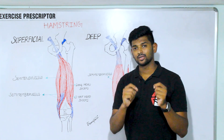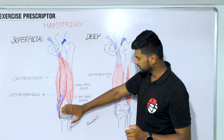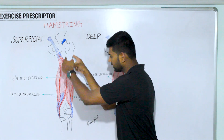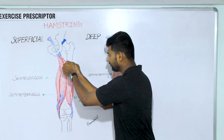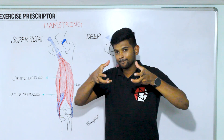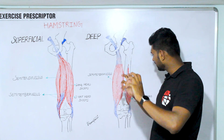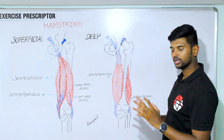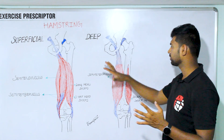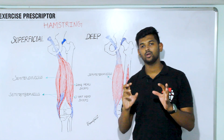Now the reverse mover action of the hamstring: consider the origin moving towards the insertion with the insertion fixed. All three muscles attach over the ischial tuberosity and fibers run vertically. When they contract in this way, they pull the ischial tuberosity downward to create posterior pelvic tilt. This excludes the short head of biceps femoris, because that muscle does not cross the hip joint and does not attach over the ischial tuberosity. So the remaining three muscles help in posterior pelvic tilt — this is the reverse mover action of the hamstring.